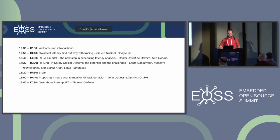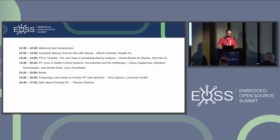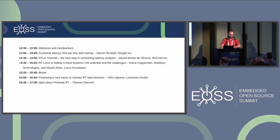We have a set of talks here. We start with cyclic test latency — finding out with tracing — where Steven will talk about how to use his libraries to parse tracing and find root causes. Then I'll talk about RTLA, which goes into the same idea but expands on it and tries to make things easy to use.